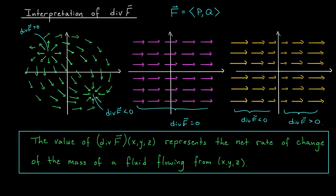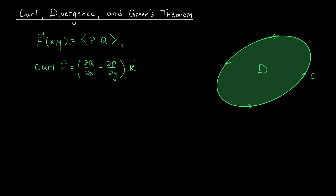The takeaway here is that we can think of the divergence at a point x, y, z as representing the net rate of change of the mass of a fluid flowing from that point. I'd like to end this video by drawing a clear connection between curl, divergence, and Green's theorem.